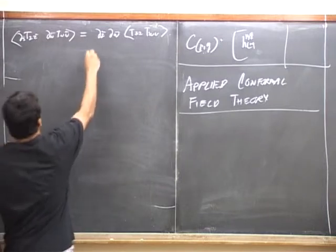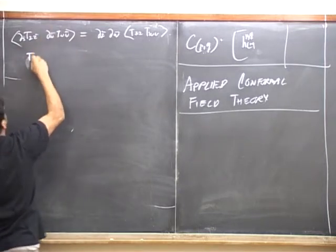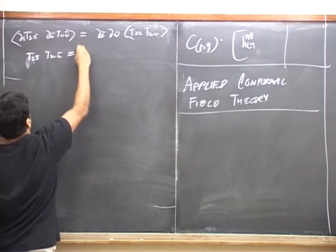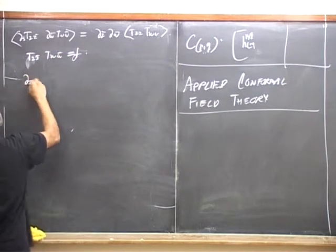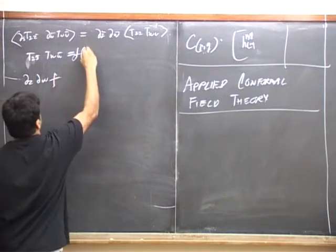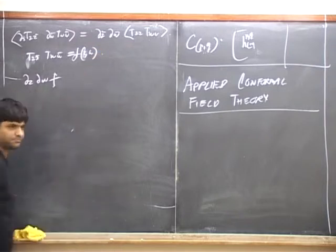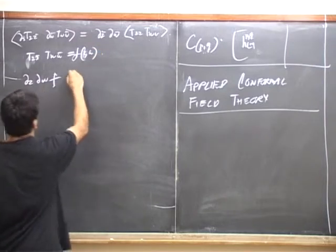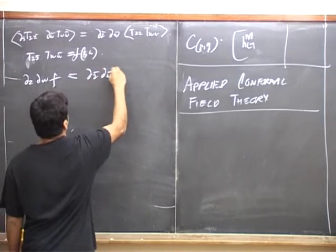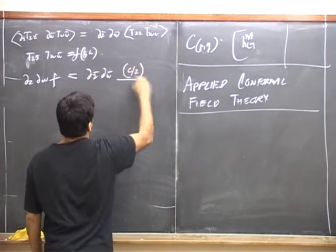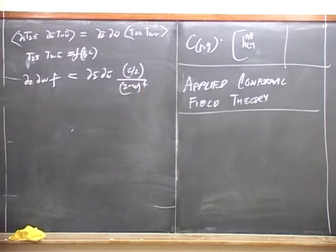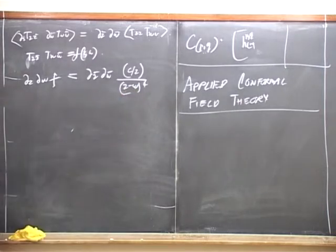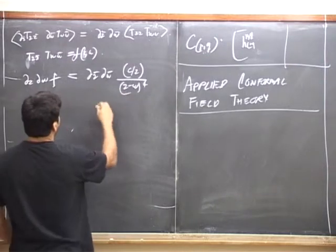We have this nice equation which tells us that del_z T_{zz-bar} times del_w T_{ww-bar} is equal to del_{z-bar} del_{w-bar} of T_{zz} T_{ww}. Now suppose I call T_{zz-bar} T_{ww-bar} and define that as f. Then I conclude that del_w del_z of f is equal to del_{z-bar} del_{w-bar} of (C/2) times (z - w)^{-4}.